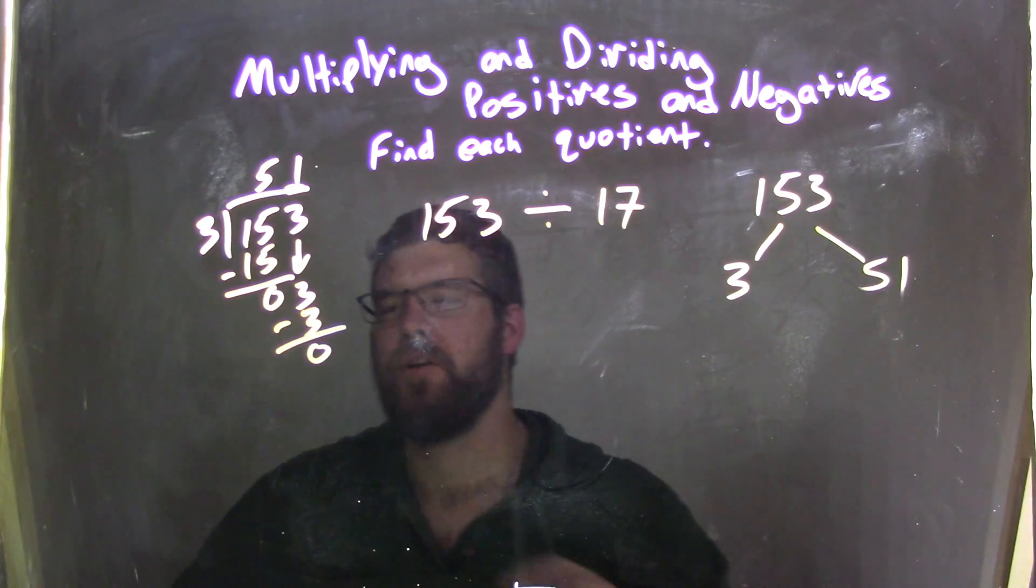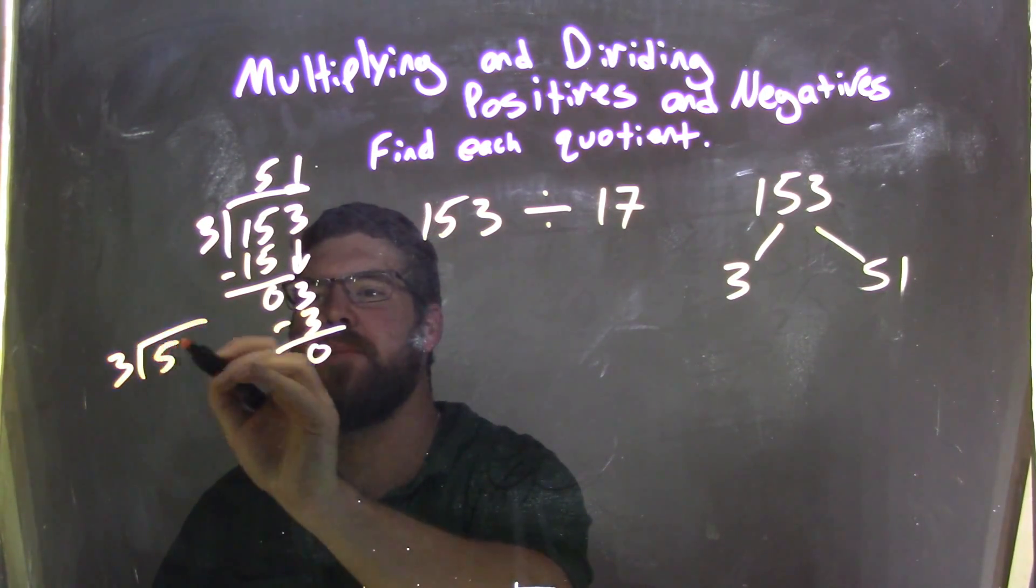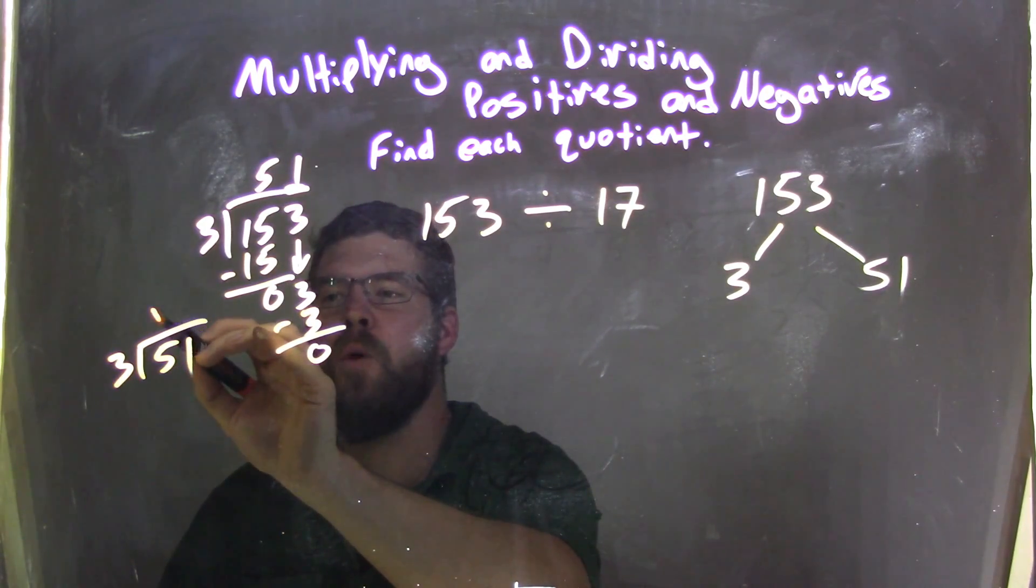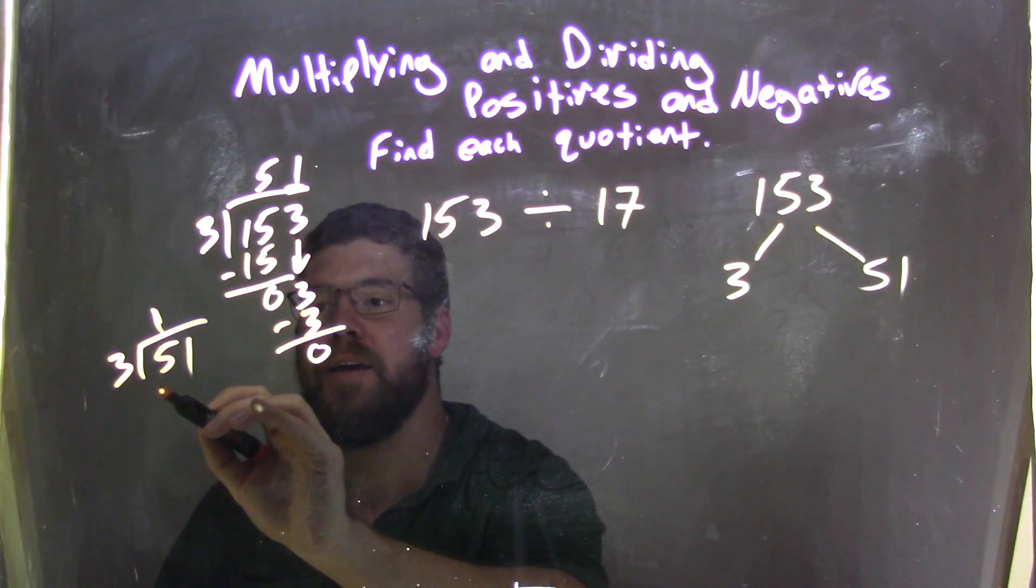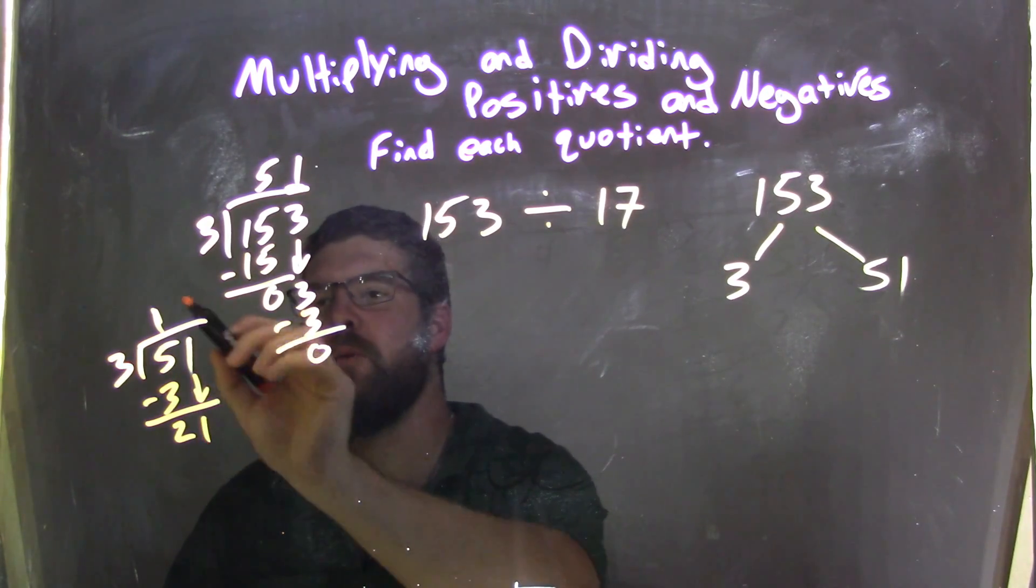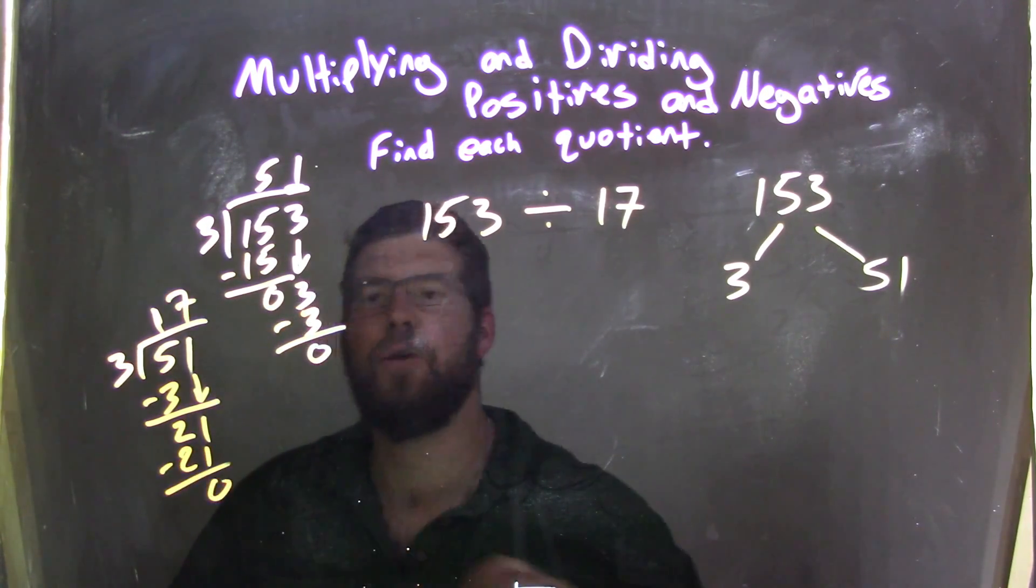It is. So we have 3, right? I'm going to rewrite it here. 3 goes into 51. Well, 3 goes into 5, 1 time. 1 times 3 is 3. We subtract it. 5 minus 3 is just 2. Bring down the 1. And 3 goes into 21 seven times. 7 times 3 is 21. We subtract it. 0, we're good.